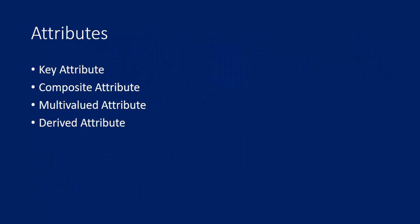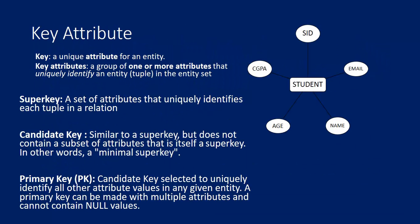There are different kinds of attributes: key attributes, composite attributes, multi-valued attributes, and derived attributes. A key attribute uniquely identifies an entity. A composite attribute is when multiple attributes together represent a single attribute. A multi-valued attribute is when multiple values are stored in a single attribute. A derived attribute is one generated by calculating from other attributes.